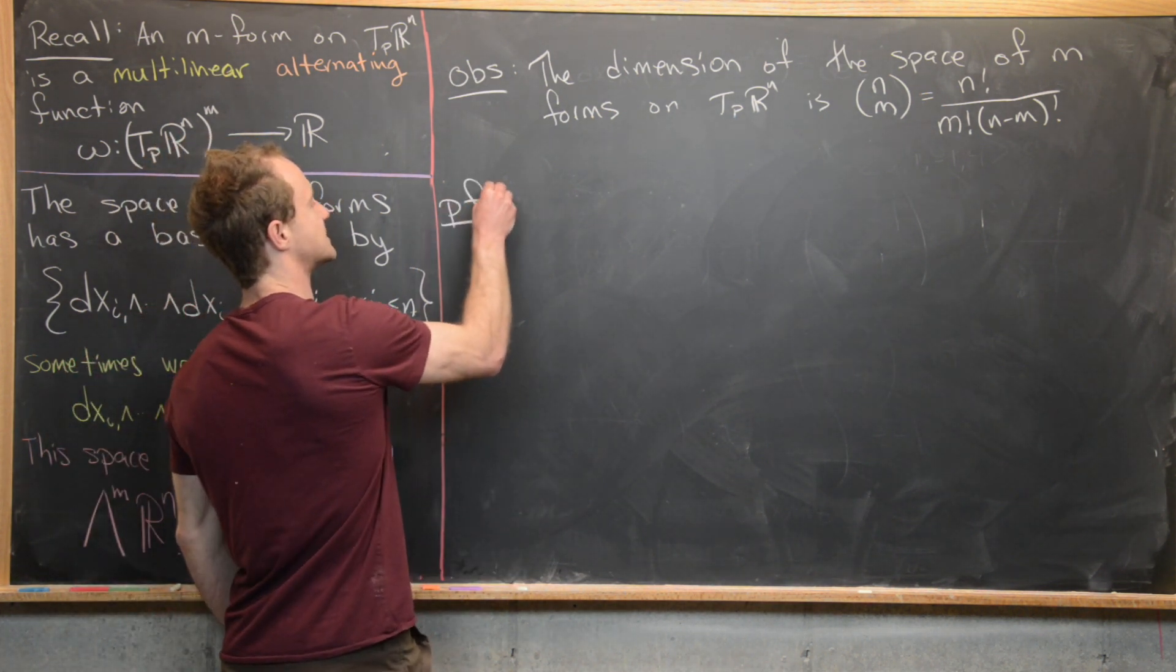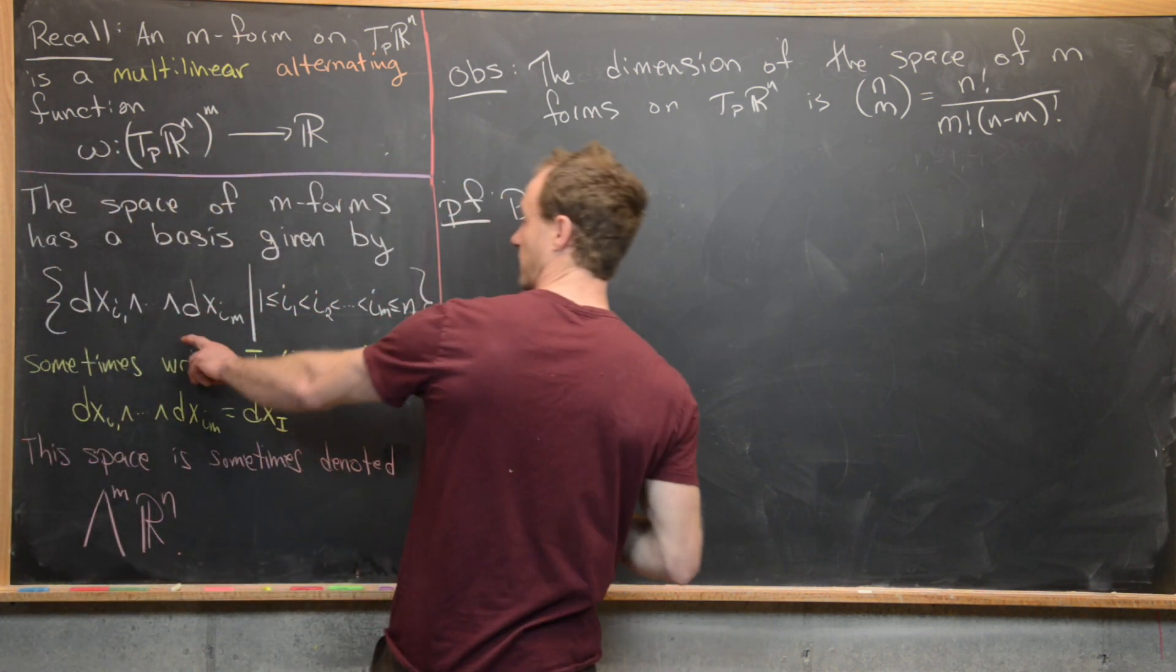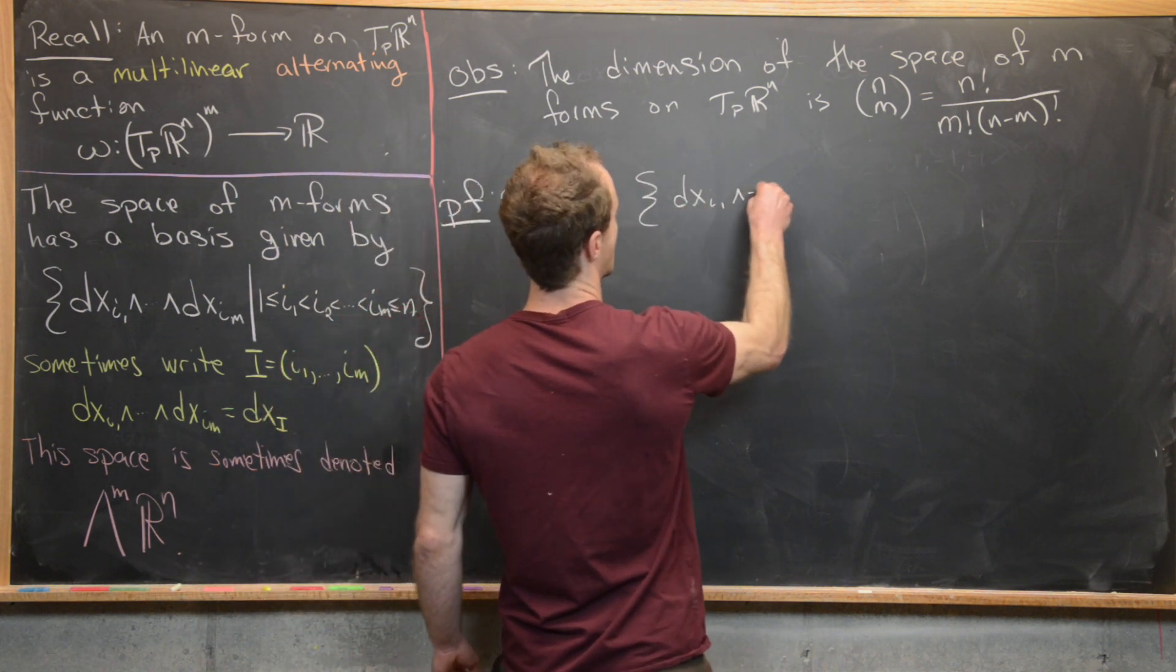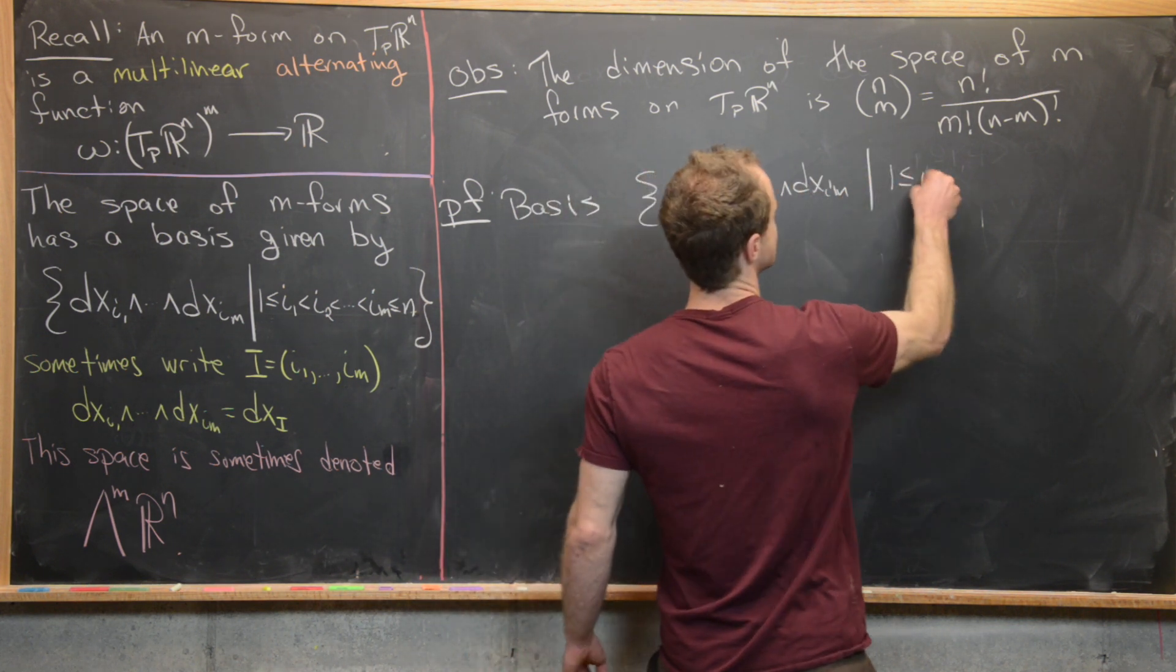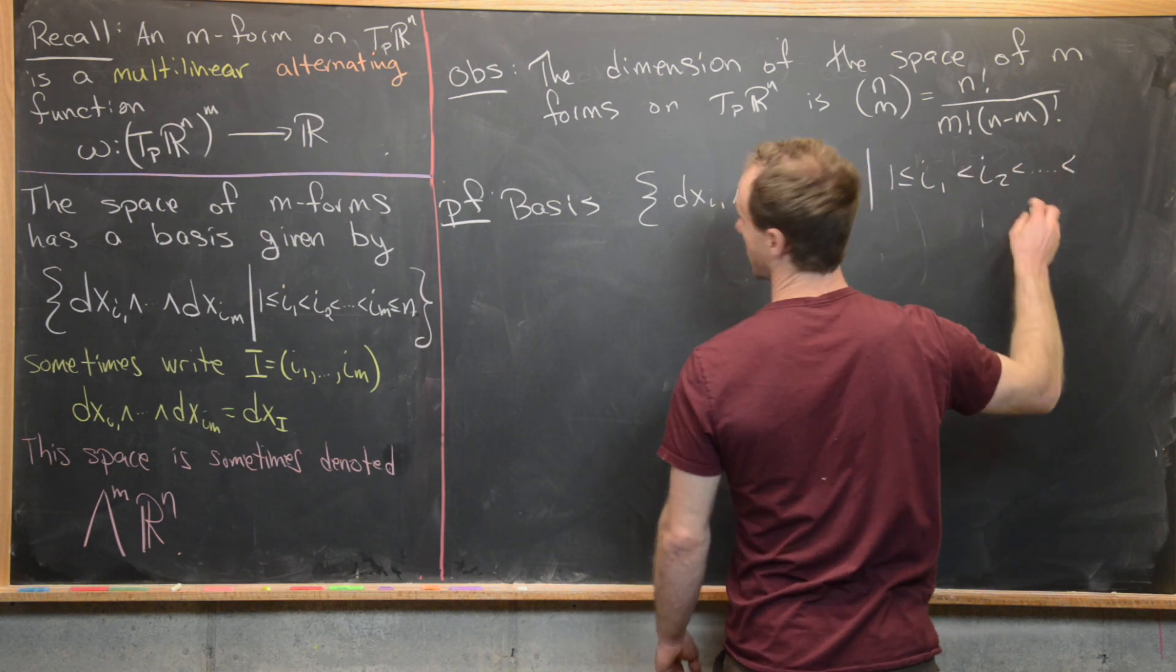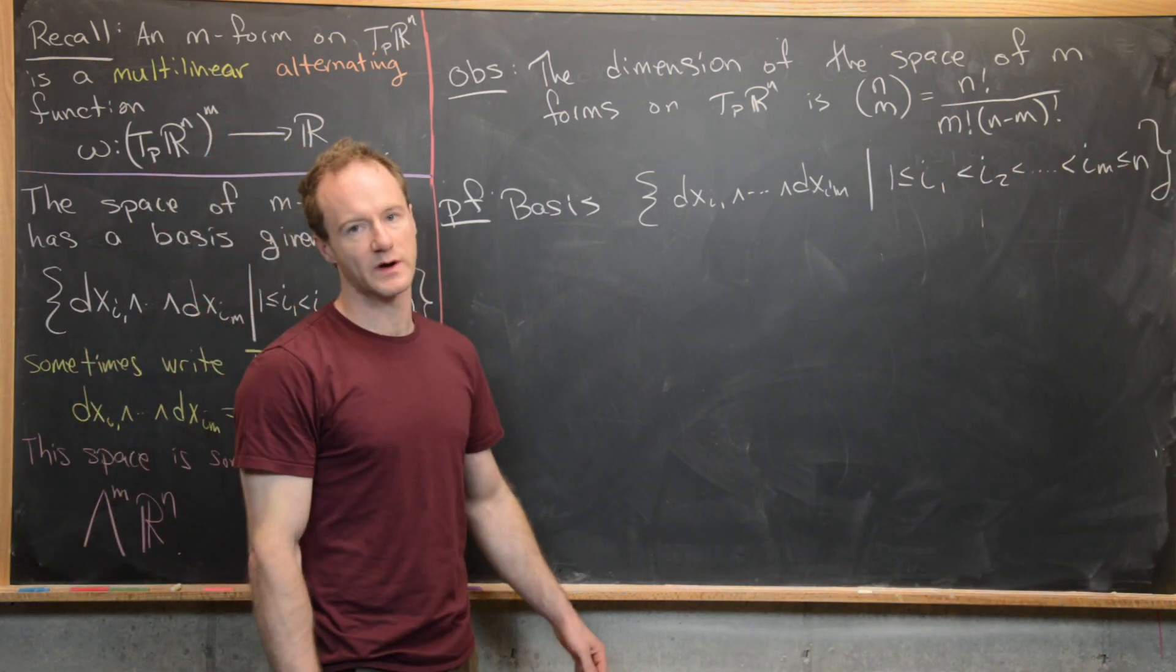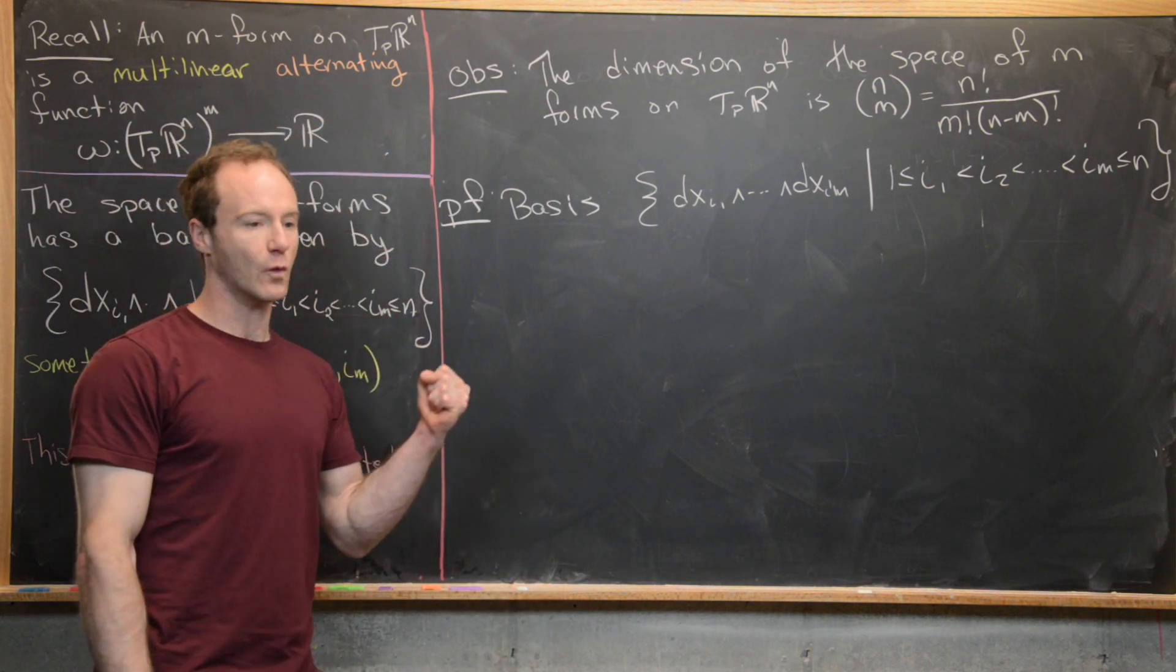So maybe let's look at the proof of this. So we know we can take a basis given by forms of this type, these elementary M forms. In other words, here we have DXI1 wedge all the way up to DXIM such that 1 is less than or equal to I1, which is less than all the way up to IM, which is less than or equal to N. But now this is a straightforward counting argument.